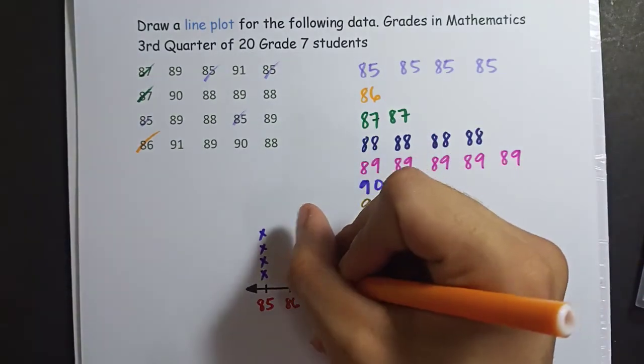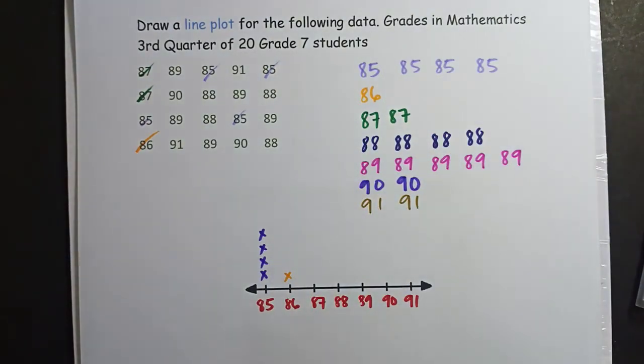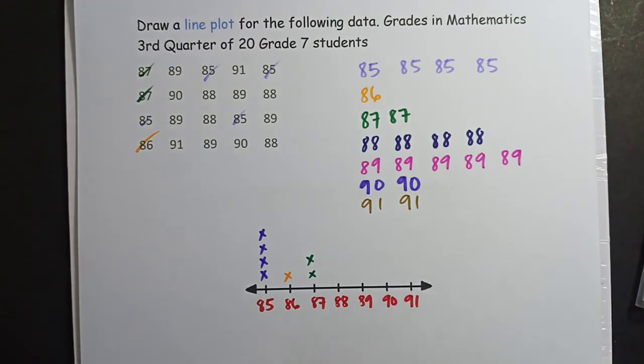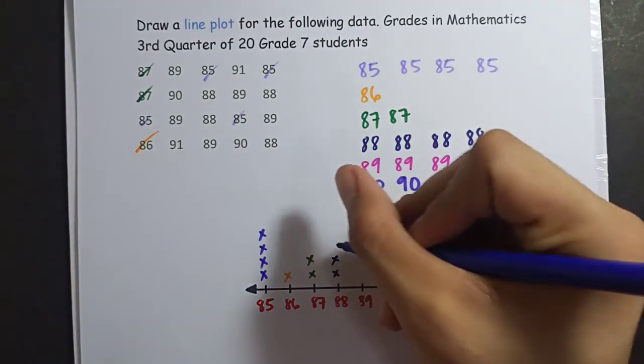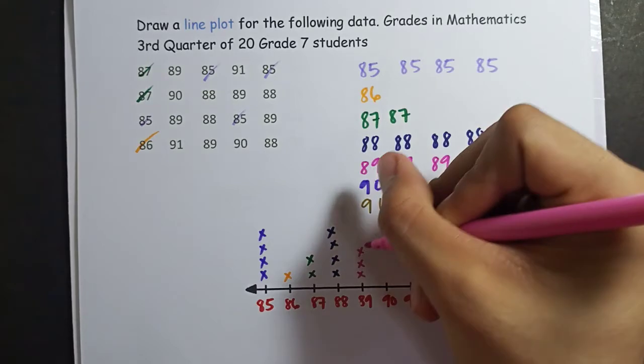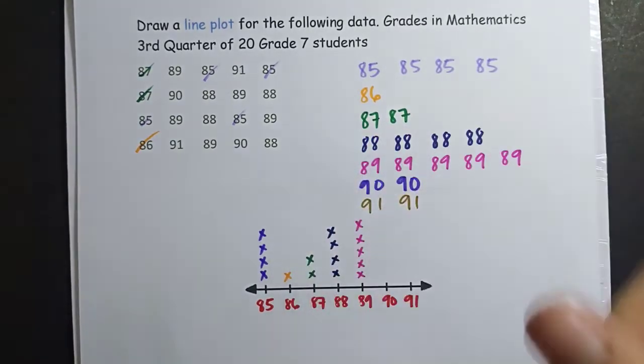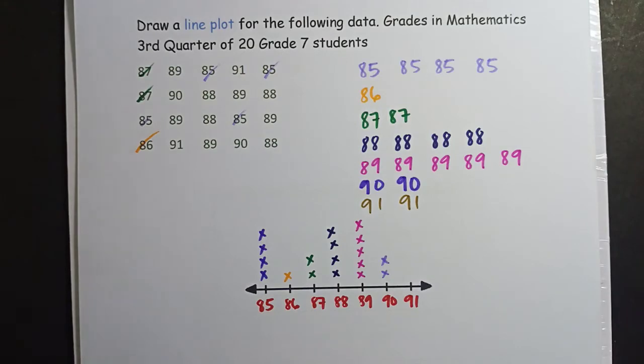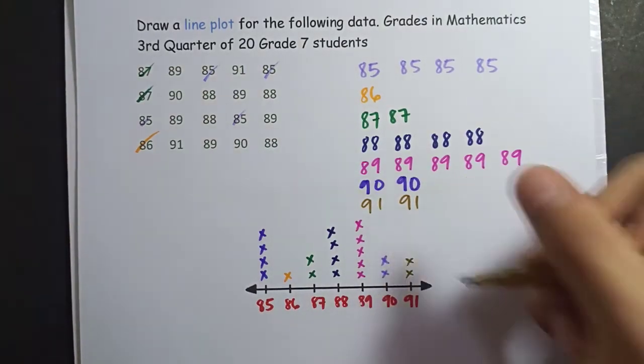For 86, how many 86 do we have? One. So one X. For 87, how many? 87 is two. So two X's, 1, 2. That's how to make the line plot. For 88, how many? 4. So 1, 2, 3, 4. For 89, 5. So 5 X's. 1, 2, 3, 4, 5. For 90, is two. So two X marks. And 91, also two. And we're done. That's how we do the line plot.